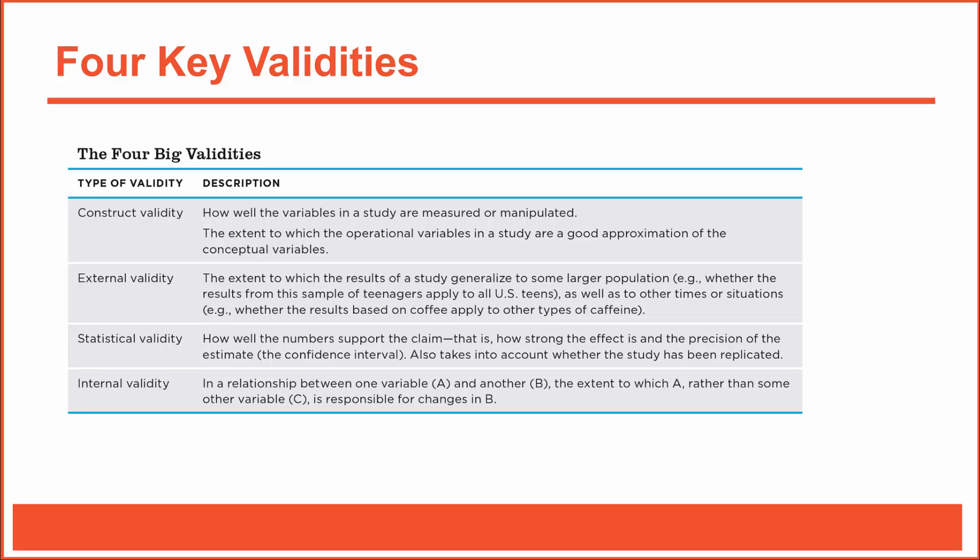Each of the four validities is important, so we'll just move from the top to the bottom. To assess construct validity, we'll ask how well the variables in the study were measured. For example, in the depression study, how exactly did we measure depression? Was the measurement of depression based on a quick self-report survey, or was it based on an in-depth clinical assessment by a trained professional? After all, not all assessments of depression are the same — not all assessments of depression are equally valid.